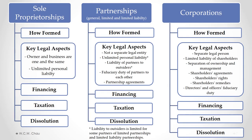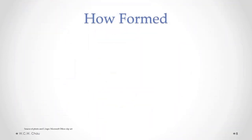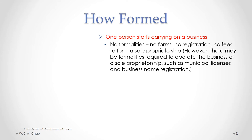Here is a map of the different forms of business organization we will be covering. For each of them, we will look at how it is formed, the key legal aspects, the financing of the business organization, the tax treatment, and how it is dissolved. The first type we will cover is sole proprietorships. How is a sole proprietorship formed? All it takes is one person starting to carry on a business — there you have a sole proprietorship. There are no formalities required to legally create it: no forms to fill out, no registration, no fees to be paid.